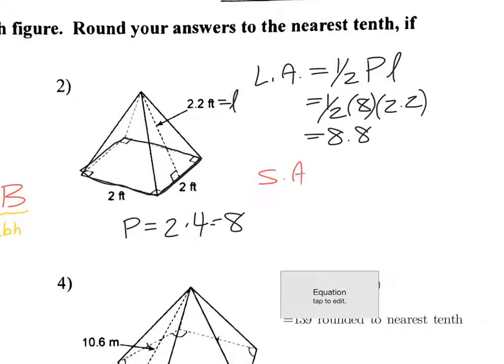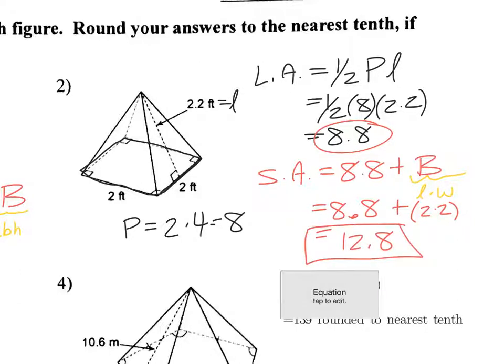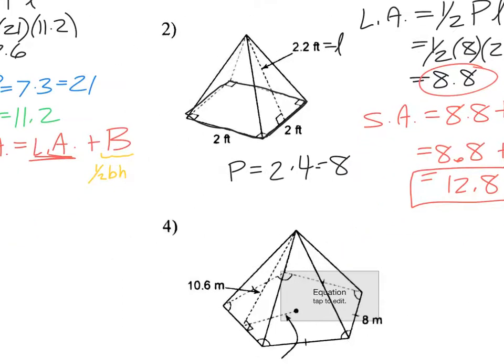Then surface area is the lateral area, which is that number. Sorry, it's not writing. Plus big B. Okay, big B in this case is, that's a square. So a square is just length times width, which in this case is 2 times 2. So now I have 8.8 plus, and then 2 times 2. 2 times 2 is 4. If I add that to that, I get 12.8. And there's my surface area. So a little bit faster there now that we know the formula.